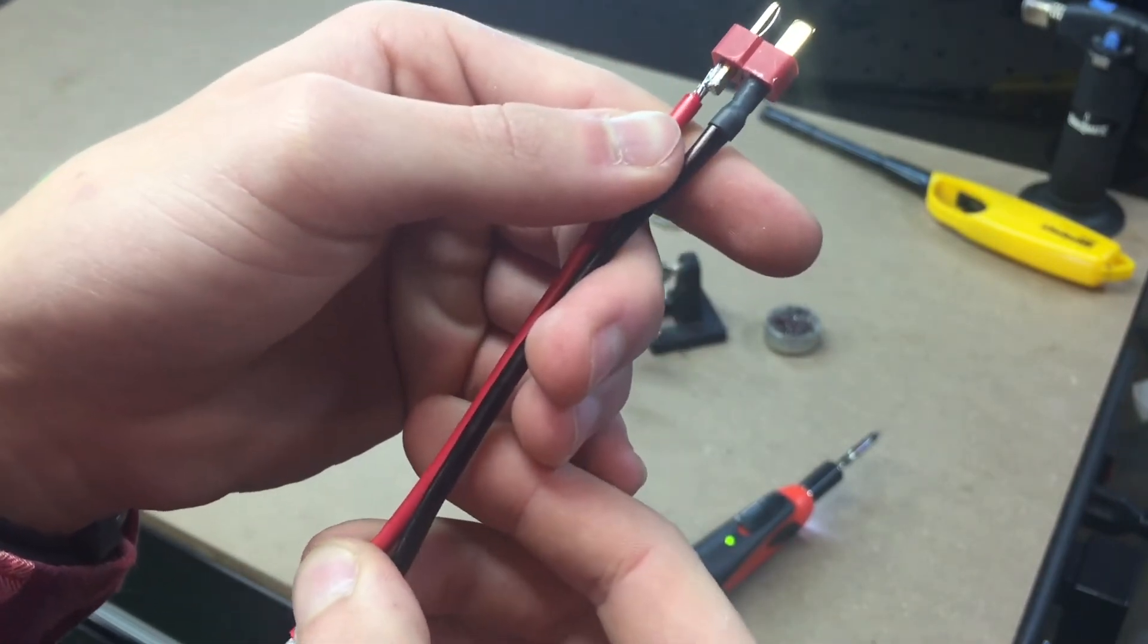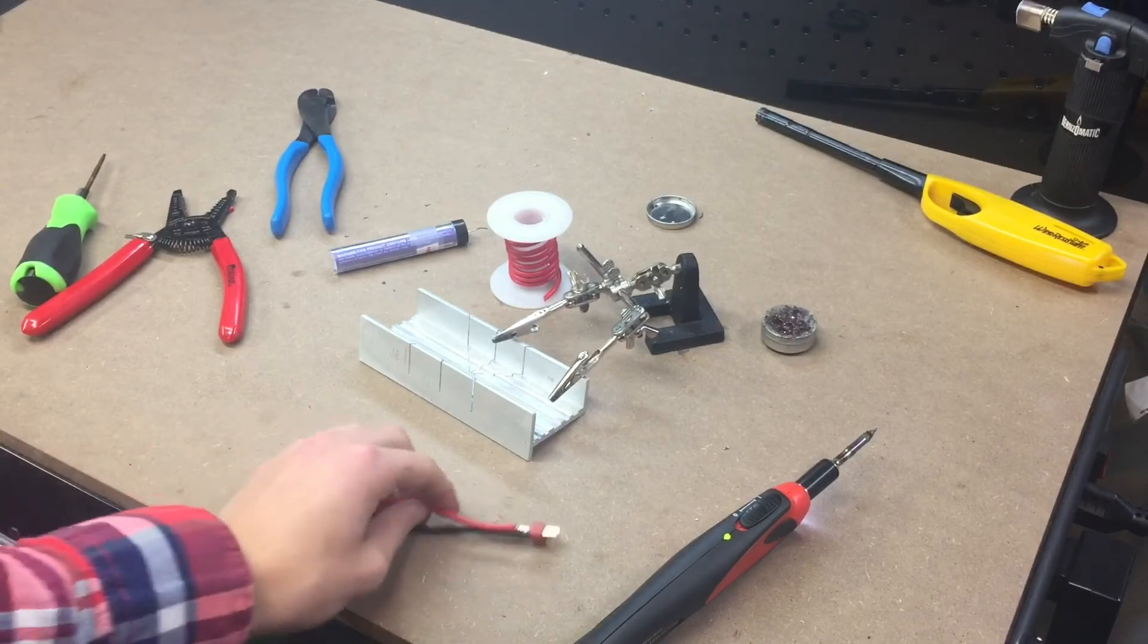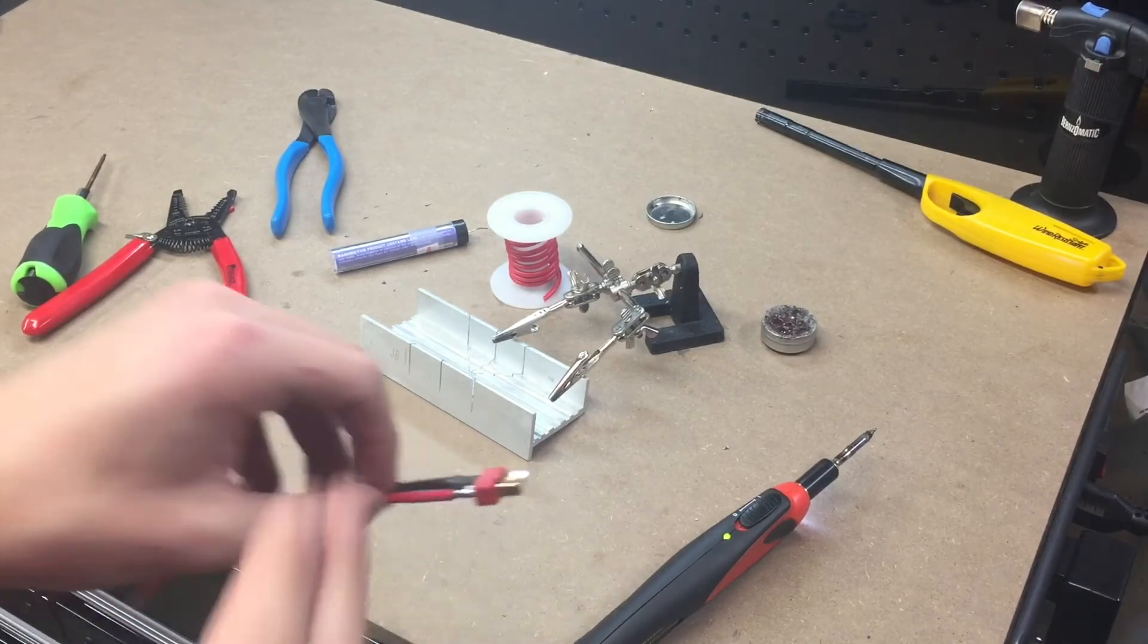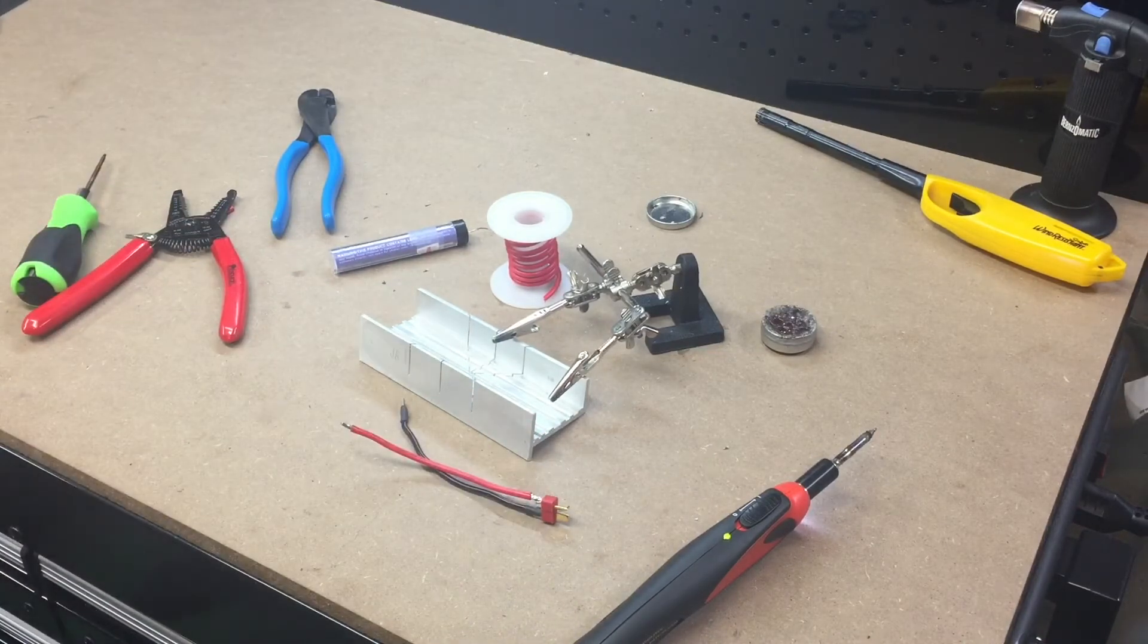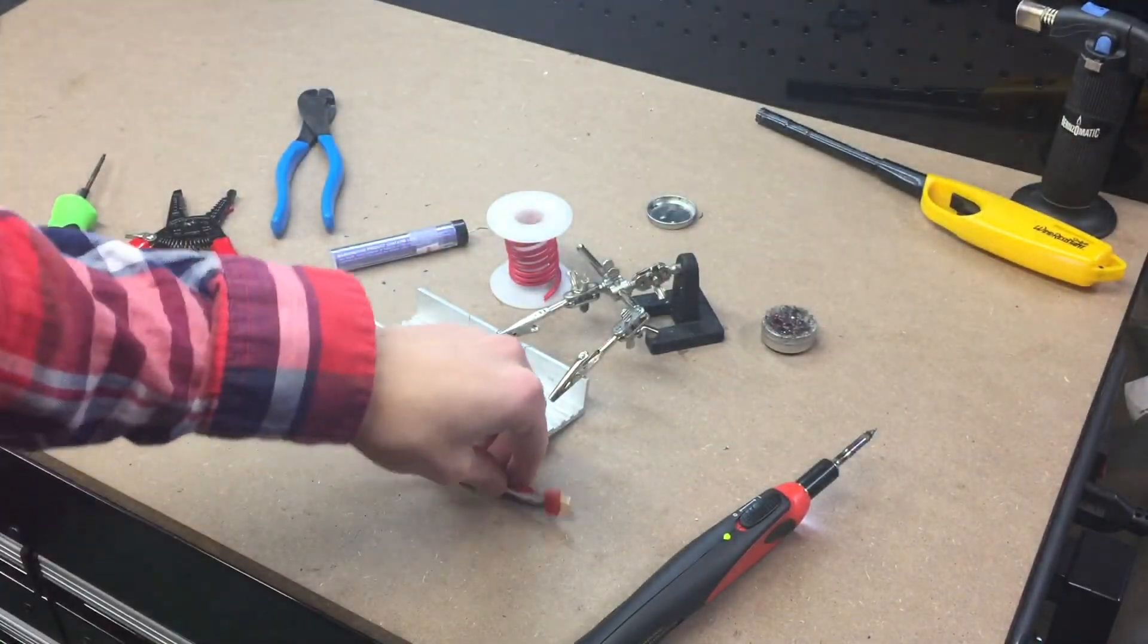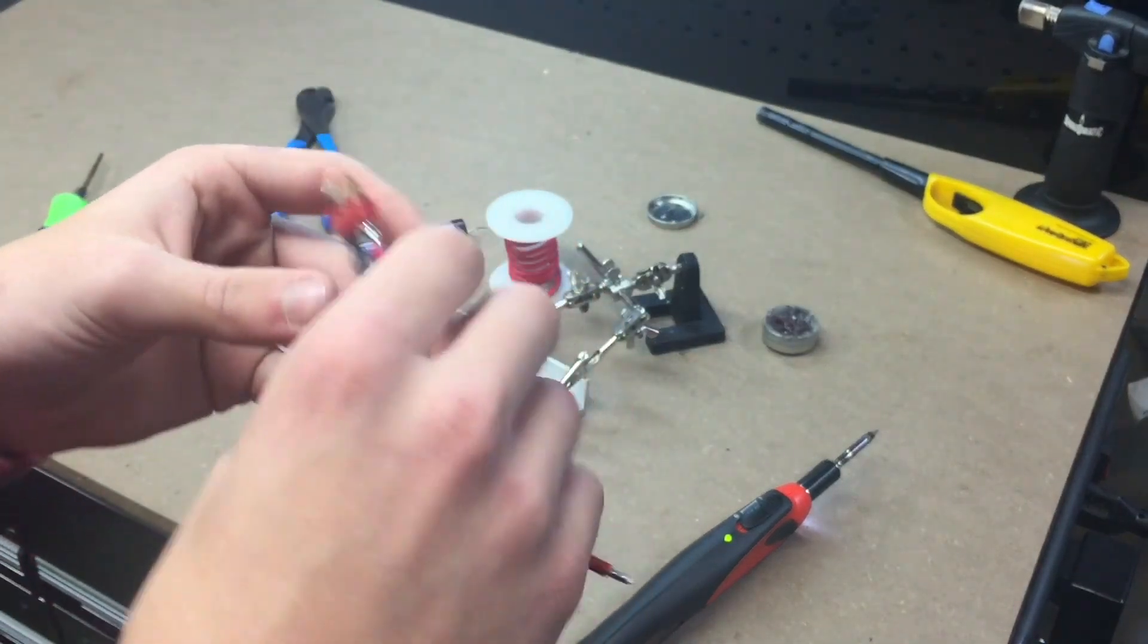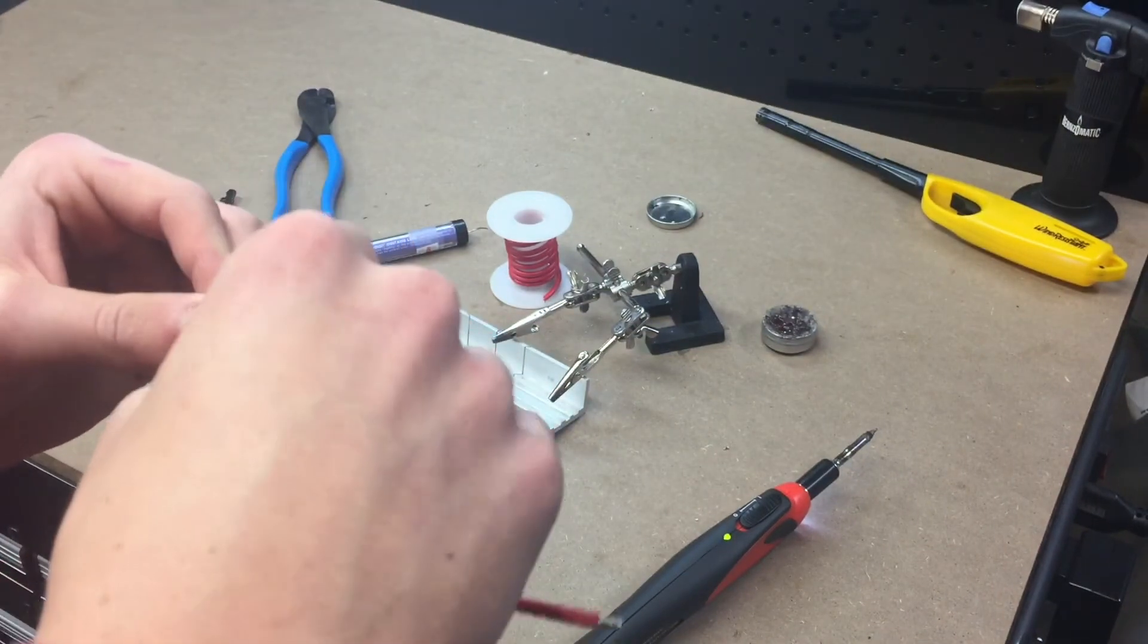So now we can take our shrink tape and put it over that so nothing contacts anything that it shouldn't. So these nice pre-cut ones already came with the Dean's plugs, and you just want to use the smallest size that you can that will still fit over the wire and the joint, covering everything properly. So that right there will do the job, but you could probably go a little bit smaller.